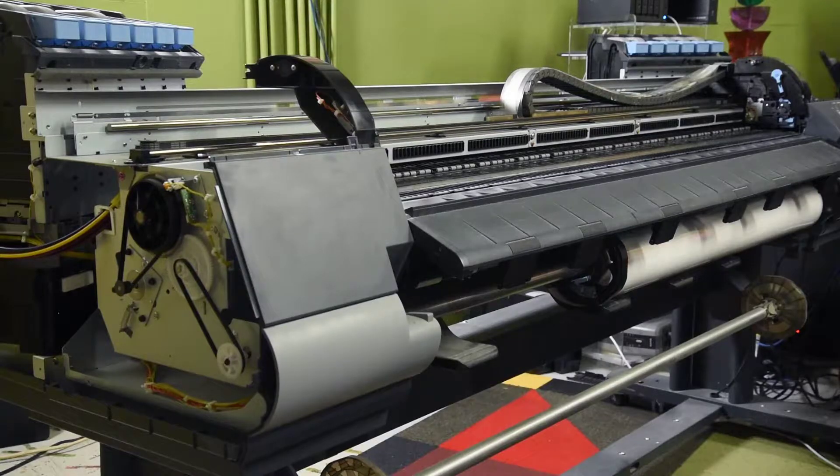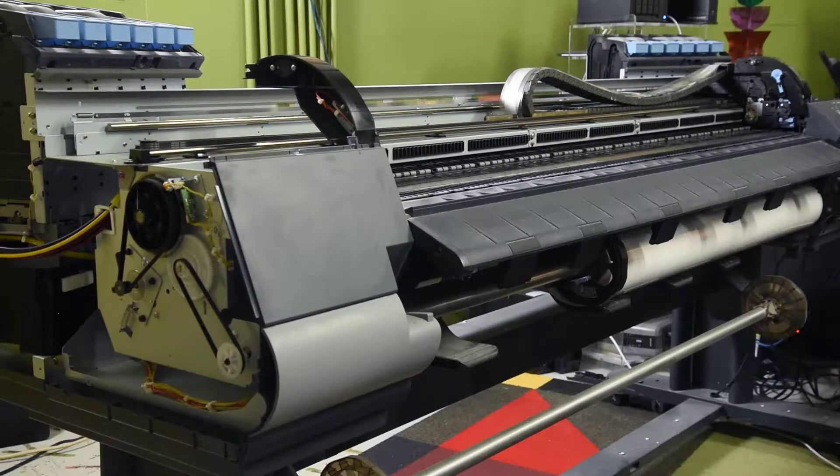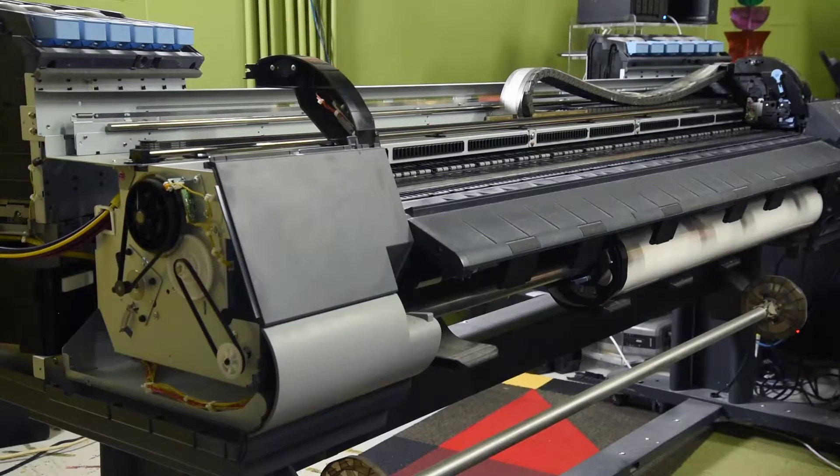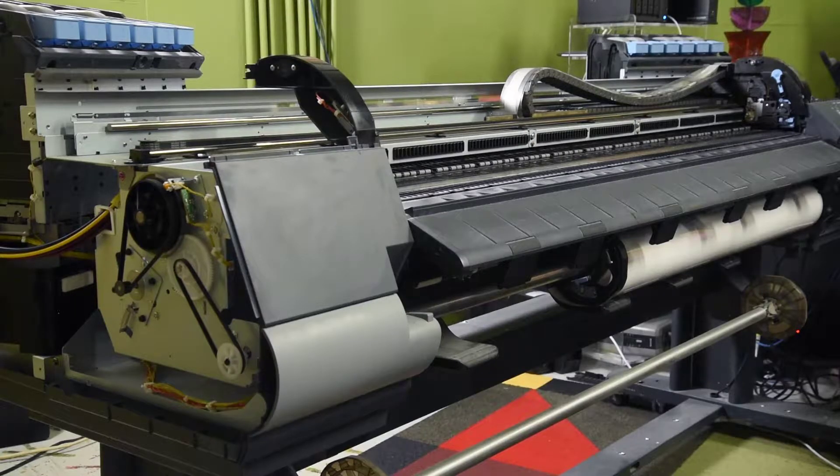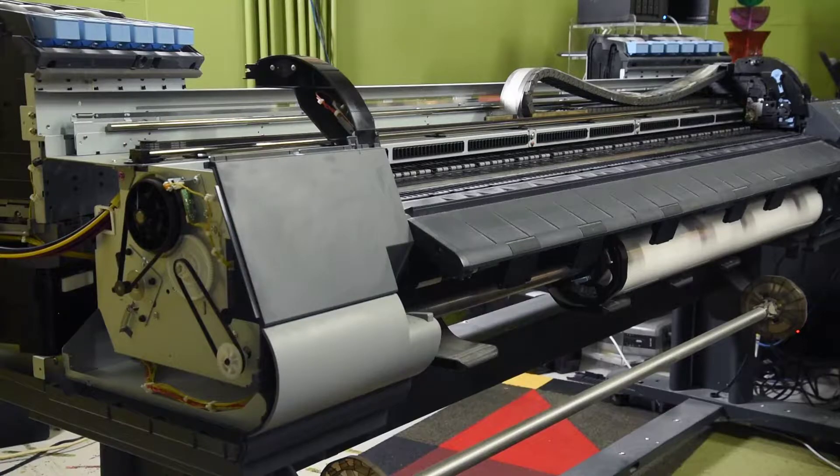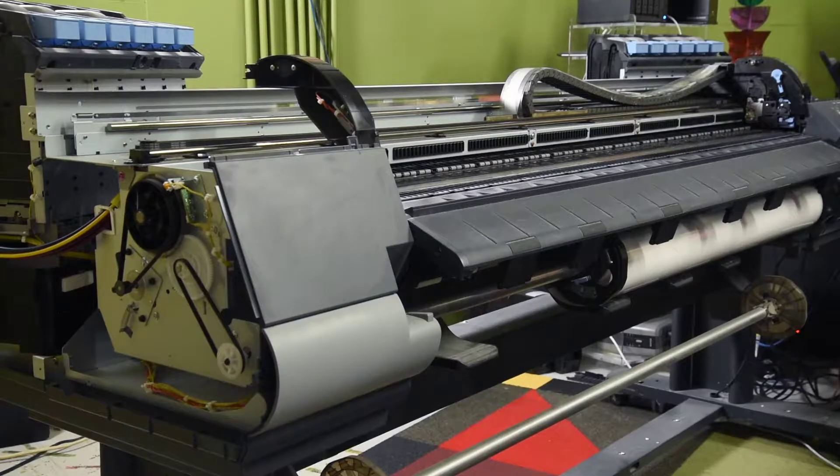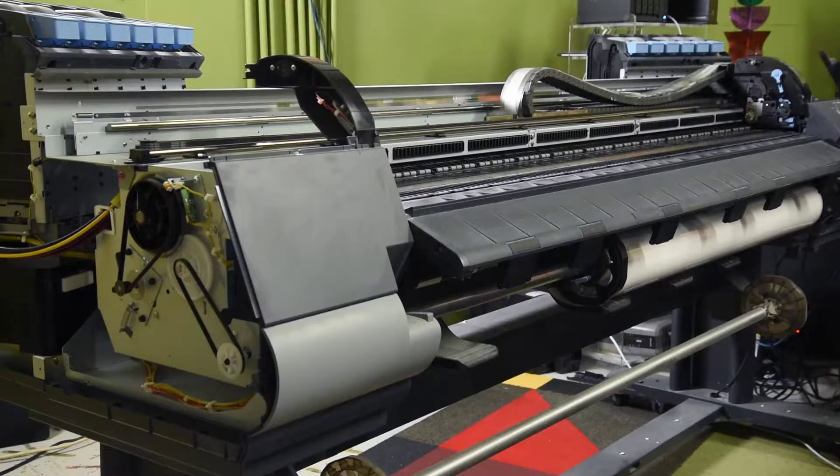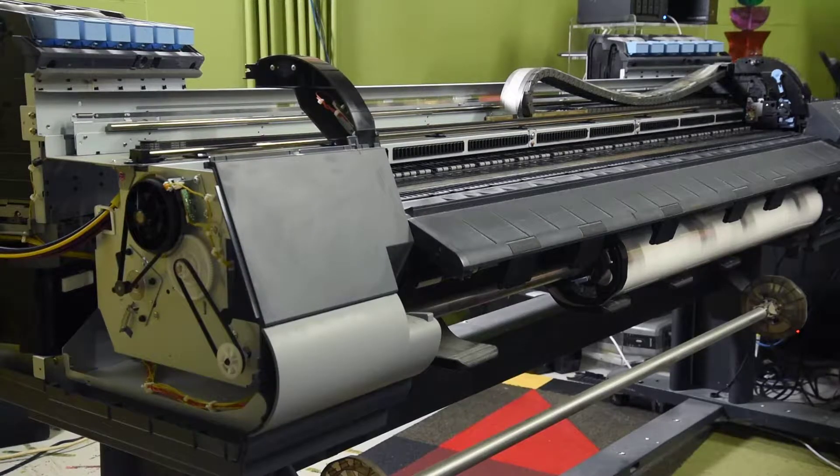What I have here is a Canon ImageProGraph IPF9400. It is giving some odd carriage and printhead errors, including saying the carriage cover is open when it is not, and it's really fond of that one. After a bit of head scratching, I believe at least one of the flexible cables is going bad.